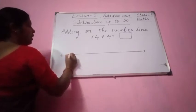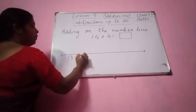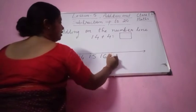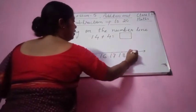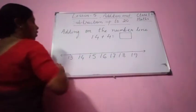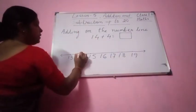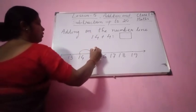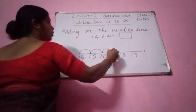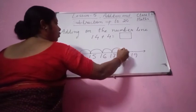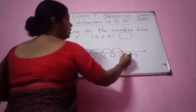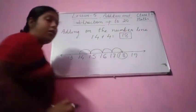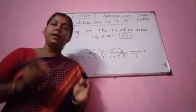So you can start from 13: 13, then 14, then 15, 16, 17, 18, 19. So you see here 14 — put your pencil here on 14. More 4 places we have to go: 1, 2, 3 and 4. 4 places you go — 18. You see here 18. So 14 plus 4, you count, it will be 18 only. So we are adding on the number line.